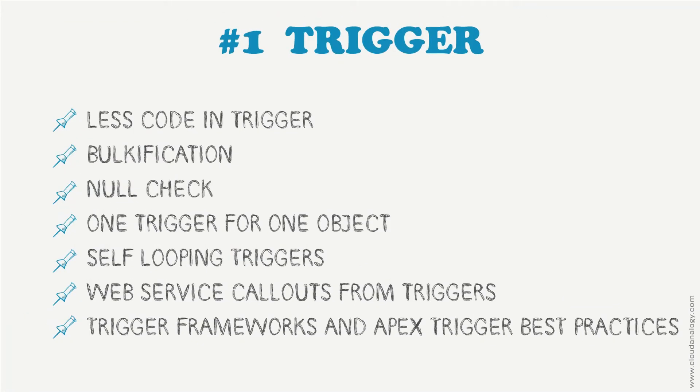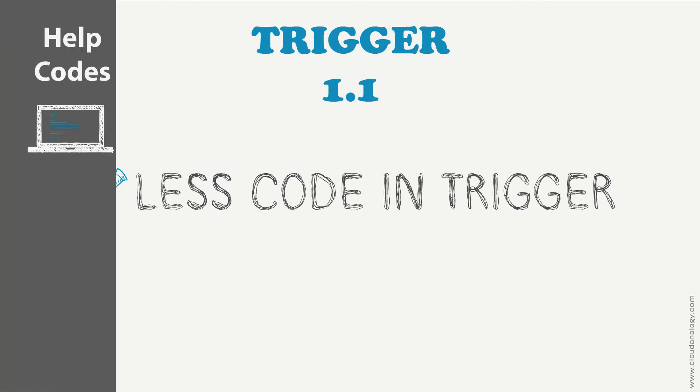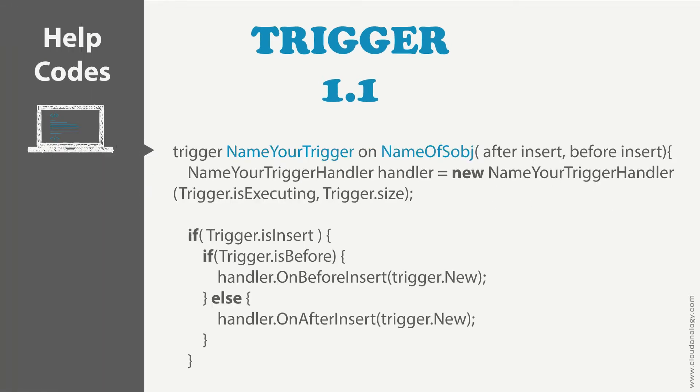We have a few points which we are going to discuss under this checkpoint. The first point is: less code in trigger. Business logic should be written in Apex classes, and the purpose of writing a trigger should be to divert the various update, insert, delete, before, and after control flows to the correct Apex class.